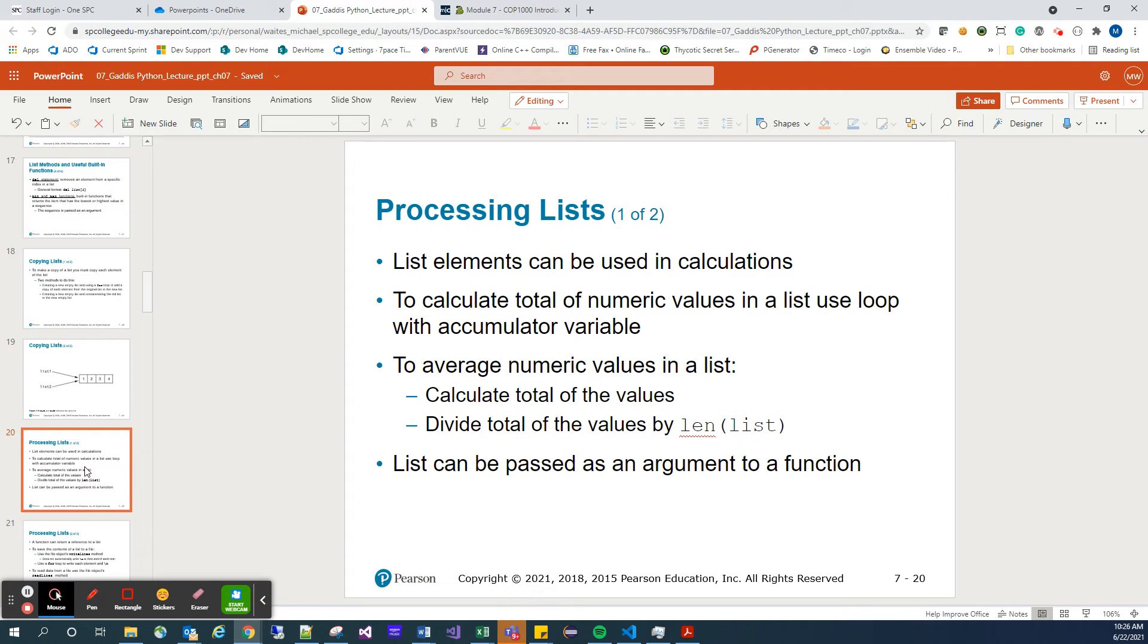Now, what do we do when it comes to processing lists? We can have list elements that are used in calculations. To calculate the total numeric values in a list, use a loop with an accumulator variable. We've kind of already done this in previous homeworks, where as we were sitting in a loop, we kept adding a certain number to our accumulator. Now, when it comes to averaging a numeric value, you calculate the total of the values using the accumulator process we just talked about, and then we divide that by the length of the list.